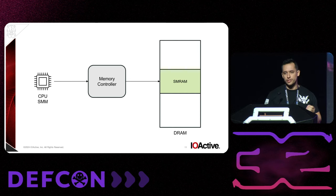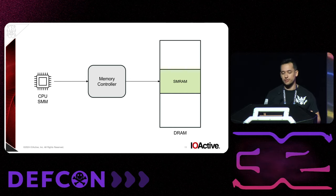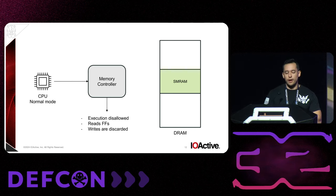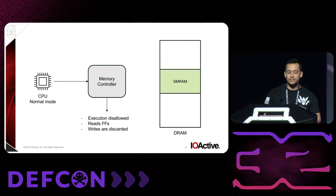We can think of the CPU when it's in SMM mode: we have the memory controller in the middle, and we can access the area where the SMM code and data lives. We can execute instructions from this area, write to it and read. However, when the CPU is in normal mode — meaning non-SMM — the memory controller just rejects. If you read from this memory, you're just going to receive Fs; writes are discarded, and execution is disallowed.